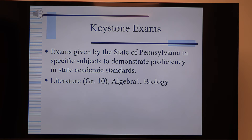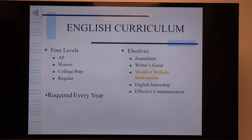The English curriculum has four different levels. At the ninth grade level there are three: regular, college prep, and honors. As students move to junior and senior year there are AP classes. There are also electives in the English curriculum — the one available for ninth graders this year is the World of William Shakespeare. Every year a student must take an English class, but an elective does not count as that English class.